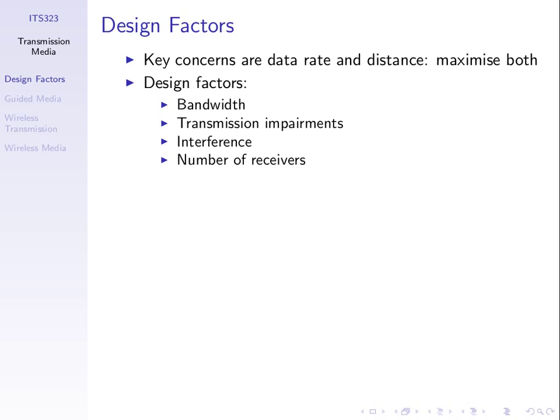The number of receivers in some cases also impacts how far we can send - we may see that when we talk about LAN technologies. Different transmission media allow different bandwidths, have different levels of impairments and interference, and these impact what data rate and distance we can achieve.